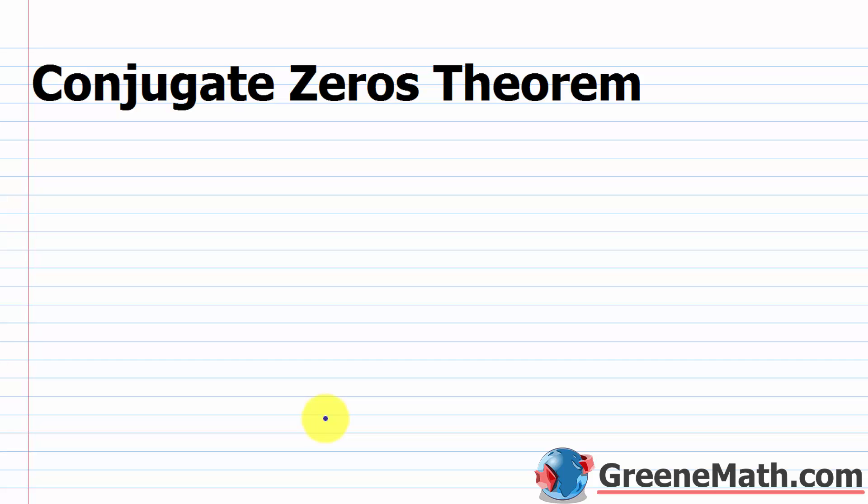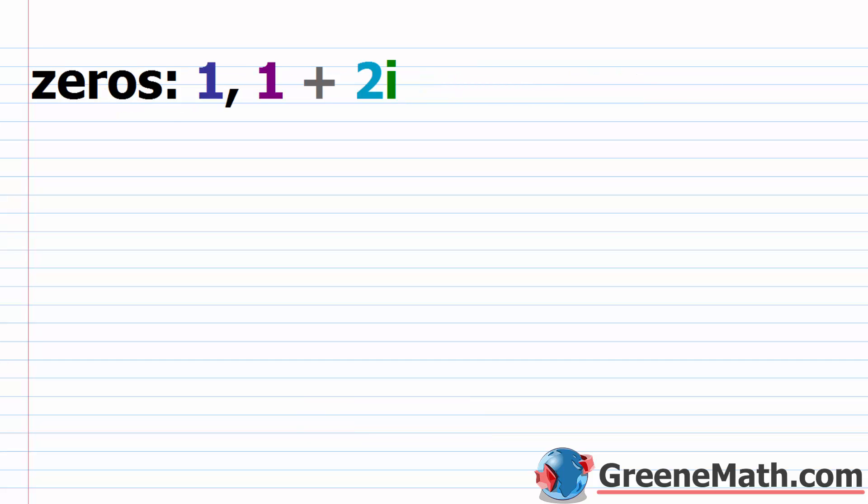In this lesson, we want to talk about the conjugate zeros theorem. As we continue to talk about finding the zeros of a polynomial function, we're going to come across this section in our book. The conjugate zeros theorem, which is also known as the conjugate pairs theorem,